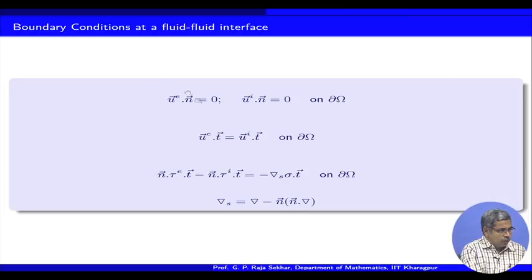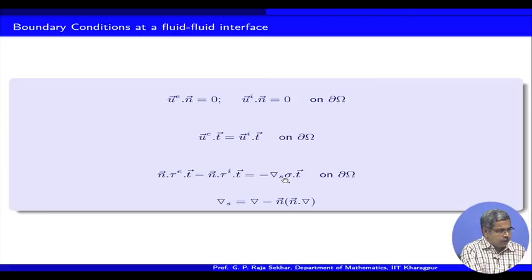To quickly recall, the boundary conditions are: the normal velocities are zero, then tangential velocity continuity, and the corresponding tangential stress is balanced by the surface gradient of the surface tension. In this case we assume that sigma is a function of temperature, whereas in the last lecture we considered sigma to be constant — so that is a major difference.